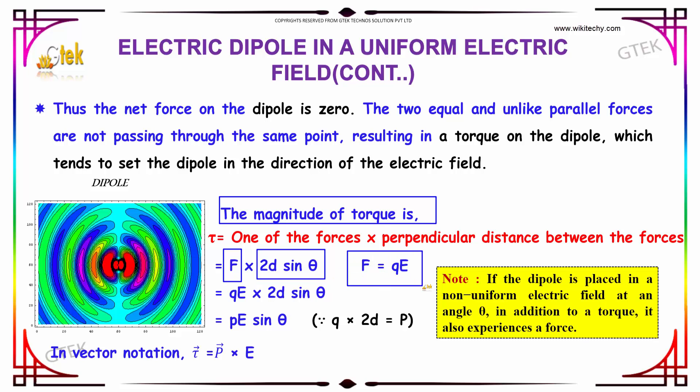We know the value, that is force equals Q into E. That can be substituted for F. So QE into 2d sin theta.